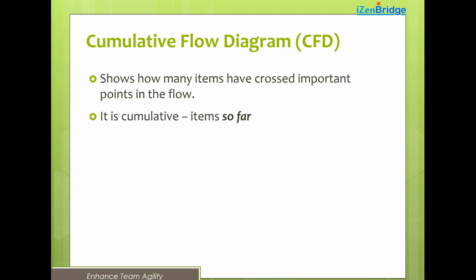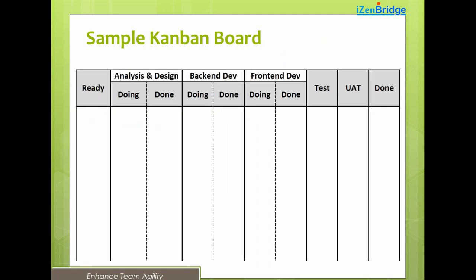The cumulative flow diagram is the most famous Kanban metric, partly because most tools like Jira support it even when they don't support other Kanban metrics. The CFD shows how many items have crossed a particular point in the flow — specifically the cumulative number of items so far. Let's look at a sample Kanban board before examining a real CFD.